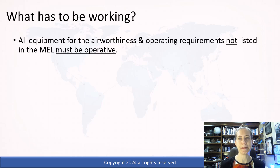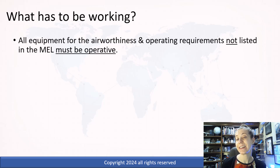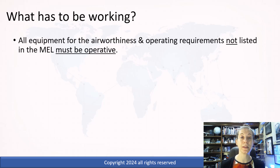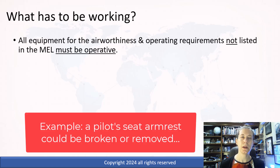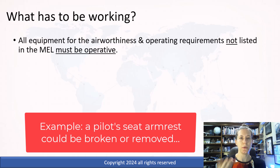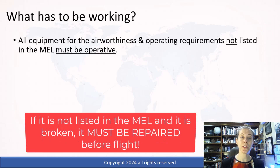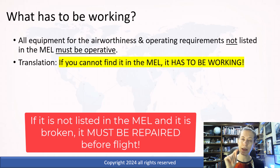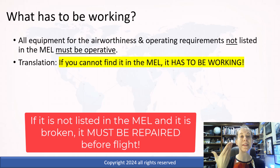So the MEL will not contain something like the ailerons — it's not going to contain something like the wing or the whole pilot's seat. These things have to be there. Now, I've seen in an MEL something like the pilot's armrest is allowed to be non-movable or even missing. That would be a comfort-type item, whereas the whole pilot's seat is not listed in the MEL. If you can't find it in the operator's MEL, it has to be working.